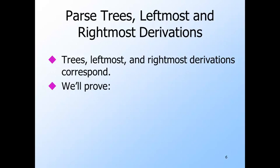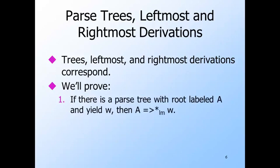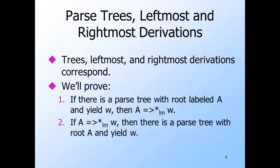We'll prove two statements. One is that if there's a parse tree with root A and yield W, then there's a leftmost derivation of W from A. The second statement is the converse: for every leftmost derivation of W from A, there is a generalized parse tree with root A and yield W. The matter of rightmost derivations is completely analogous.